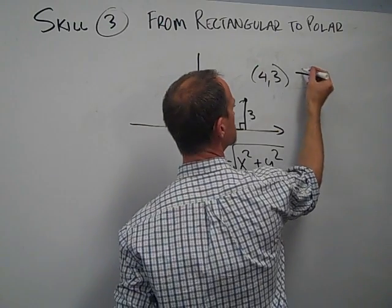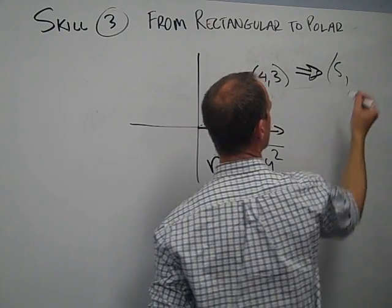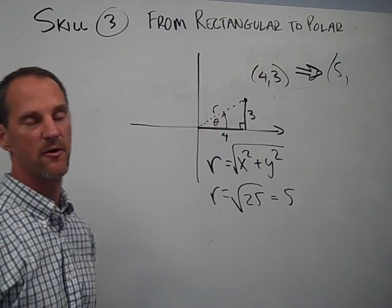So converting this into polar, this is going to be 5 comma and then some angle. So what is the angle there though?